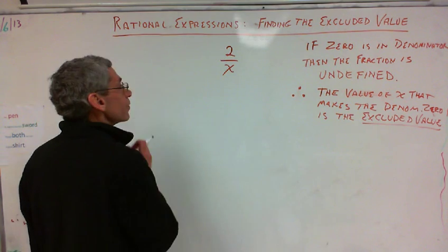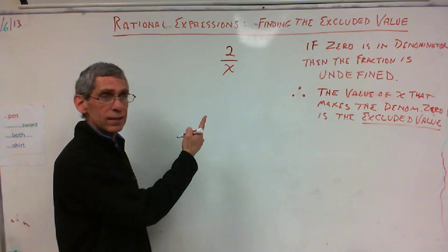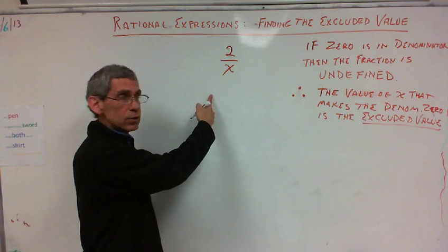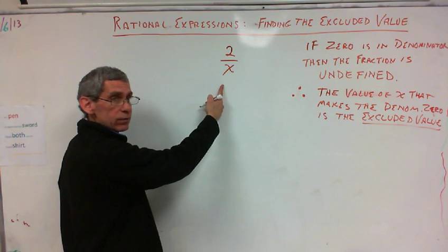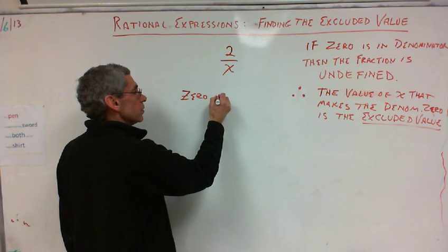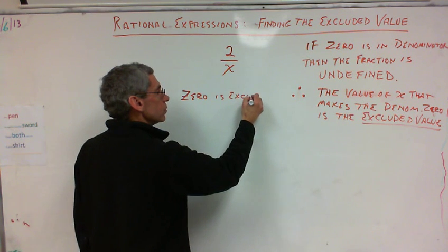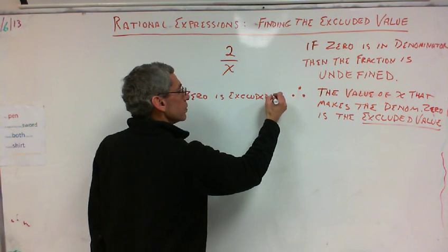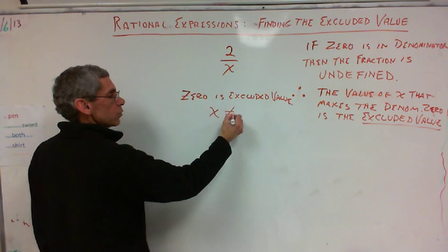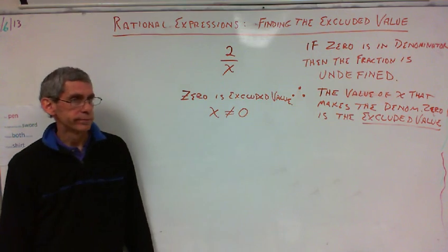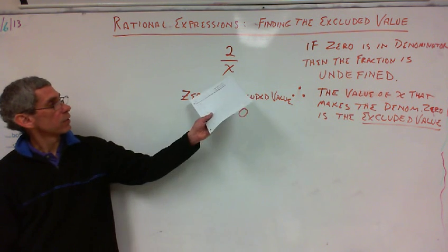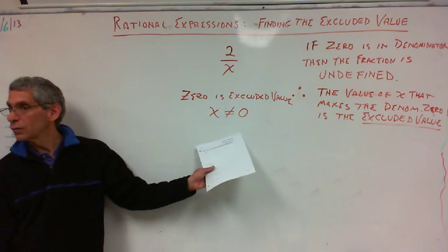So, now let's look at examples. In this case, it's really easy. X cannot equal zero. Zero is the excluded value for X. So I could write it this way: zero is excluded value. Usually though, what you'll see is this: X cannot equal zero. It's the same concept. Zero is the excluded value, or X cannot equal zero.